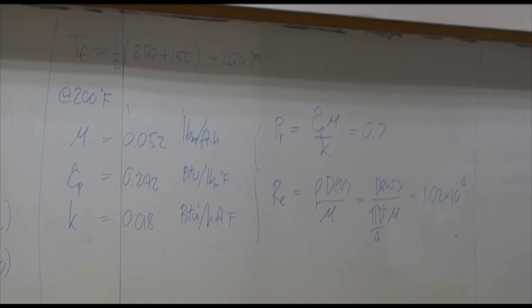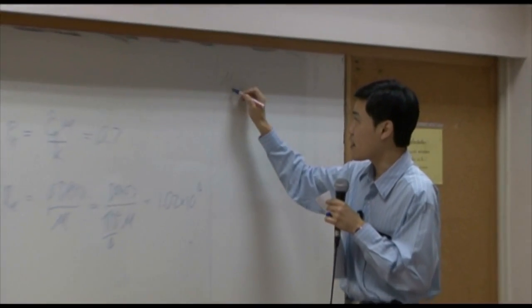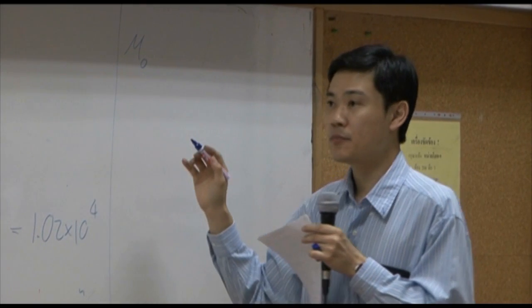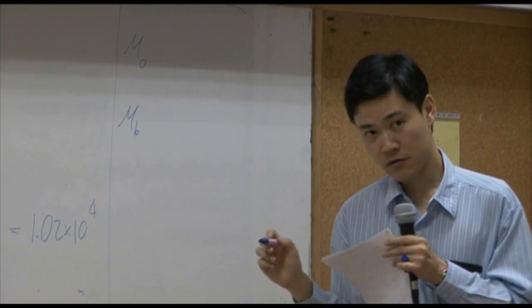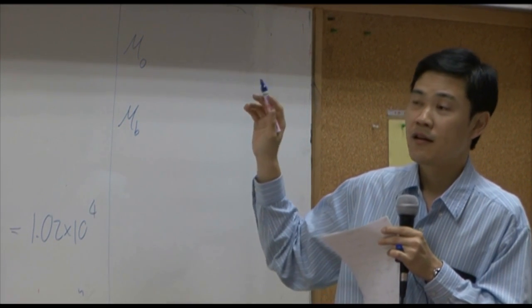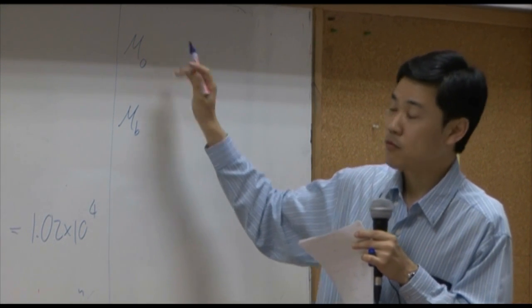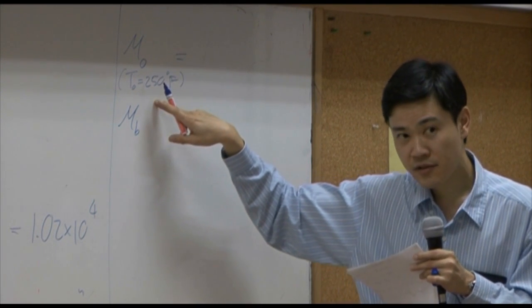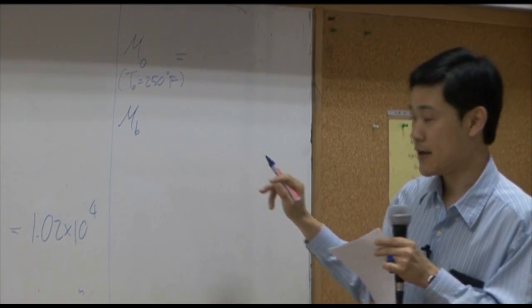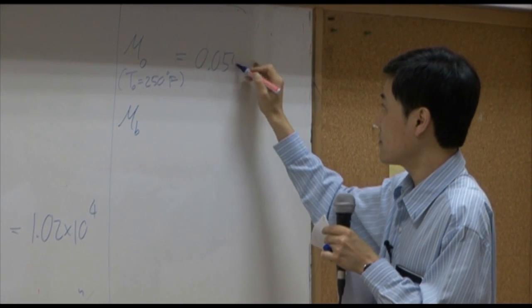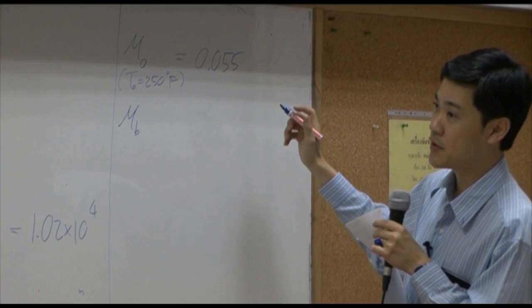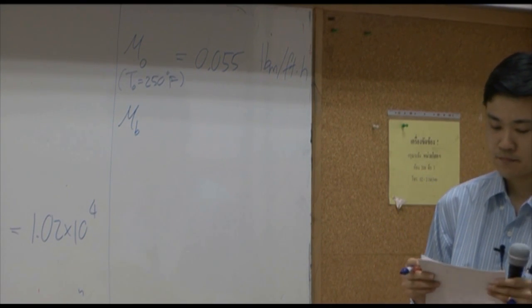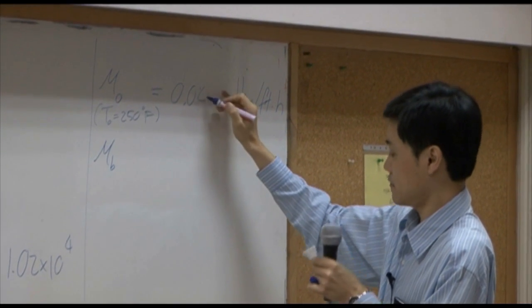Since we have temperature difference between wall and the bulk, and therefore viscosity at the wall supposed to be different from the viscosity at the bulk. But again, viscosity at the wall, temperature of the wall will be 250, constant temperature. So at this temperature, you can look it up for viscosity. Then you get 0.049 in the unit of pound per feet hour.